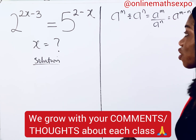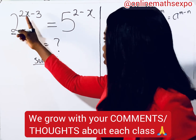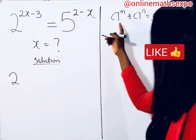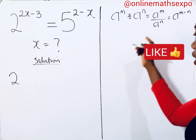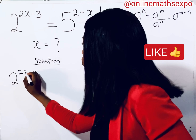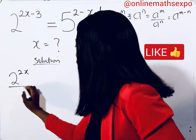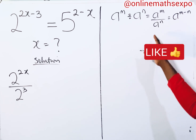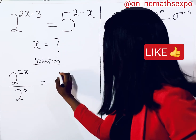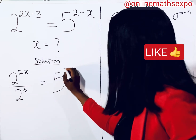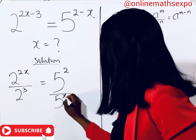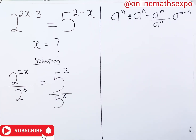Bringing this down, we have 2 to the power of 2x divided by 2 to the power of 3, which is equal to 5 to the power of 2 divided by 5 to the power of x.